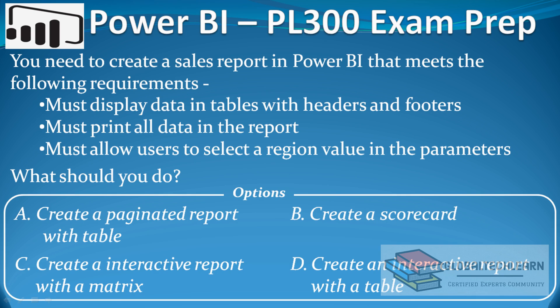Hello friends, welcome to Global Tech Learn. In today's video we will practice a Power BI question related to choosing the visual type based on a given requirement. The requirements are: we have to create a sales report in Power BI that displays data in a table with headers and footers, prints all the data in the report, and allows selecting a region value in the parameters. The options are paginated report, scorecard, interactive report with matrix, and table.